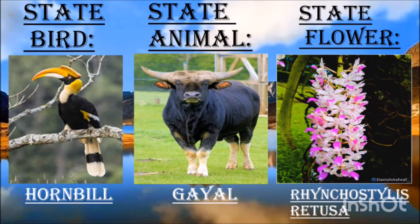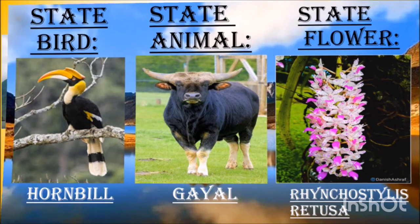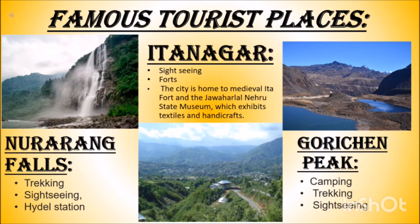The state bird of Arunachal Pradesh is the Hornbill. The state animal is Gayal. The state flower's scientific name is Rhynchostylis retusa. Tourist places in Arunachal Pradesh: Nuranang Falls is famous for trekking and sightseeing and has a hydroelectric station. Itanagar is known for sightseeing and forts. The city is home to the medieval Ita Fort and the Jawaharlal Nehru State Museum, which exhibits textiles and handicrafts. Gaurajan Peak is known for camping, trekking and sightseeing.